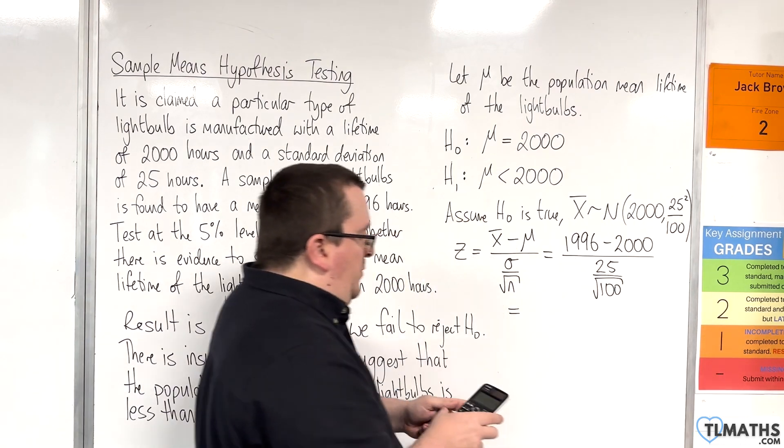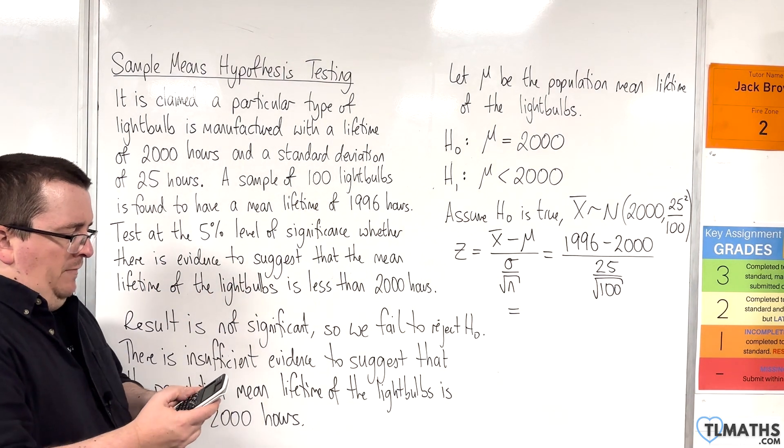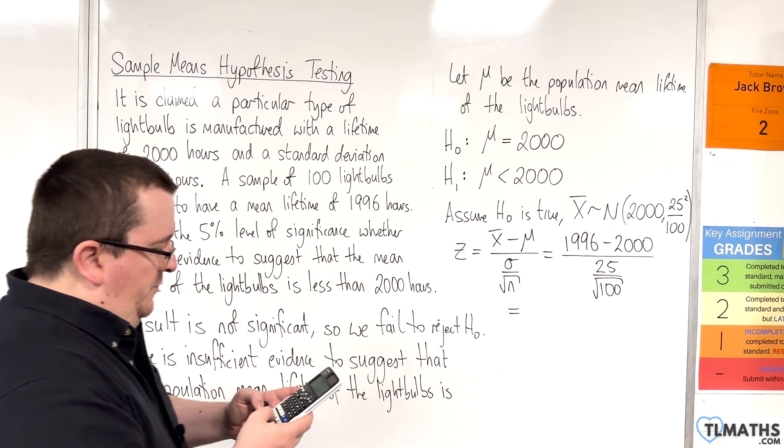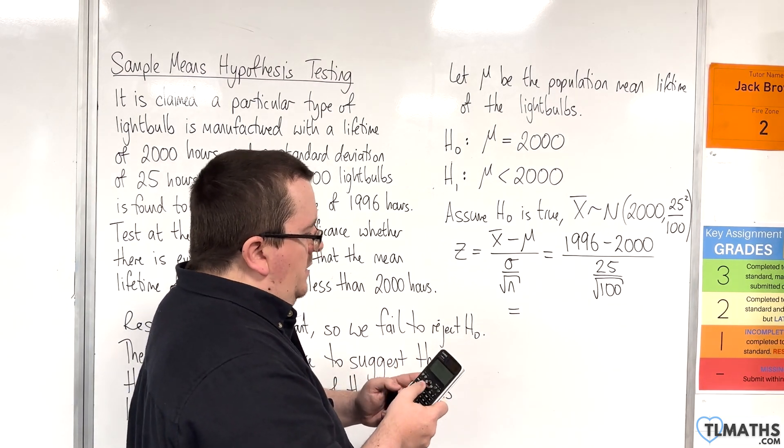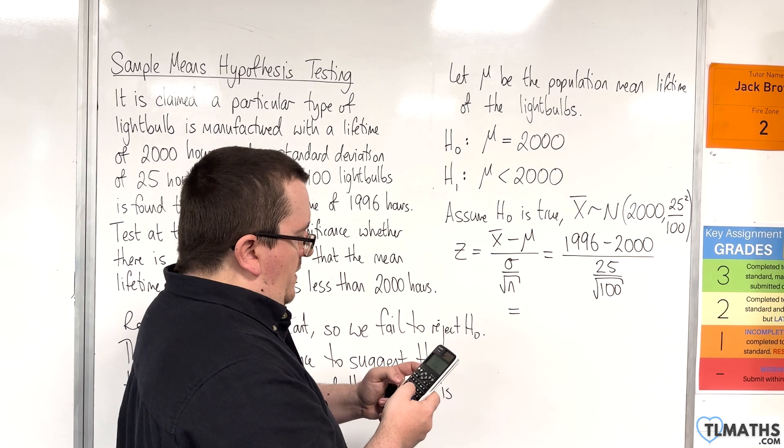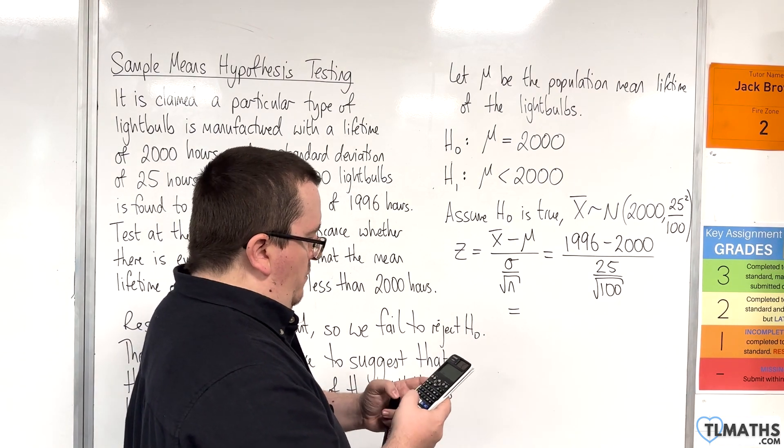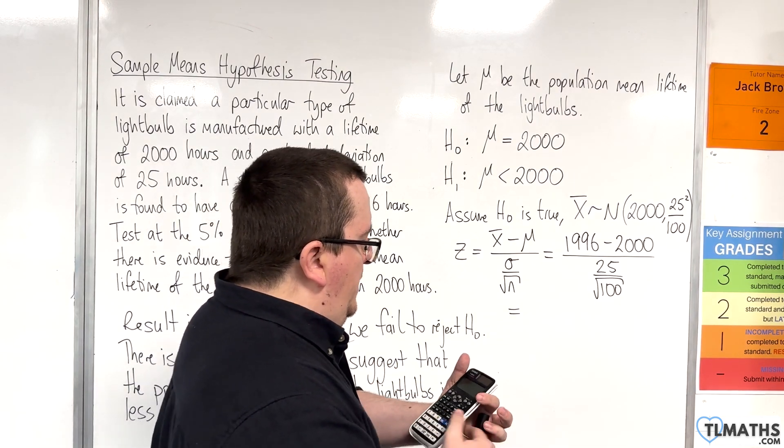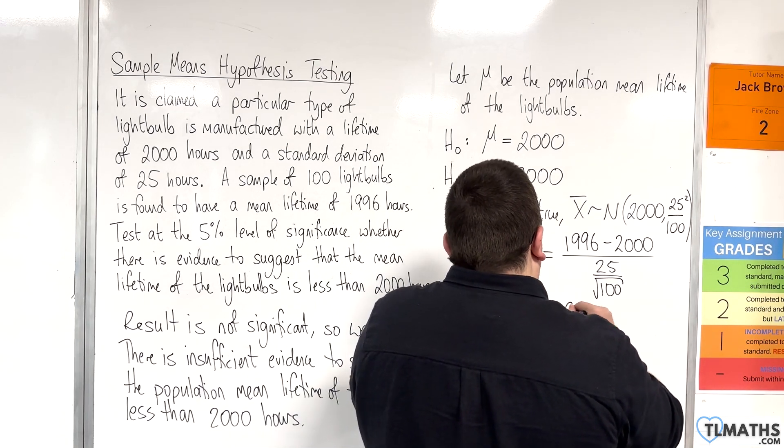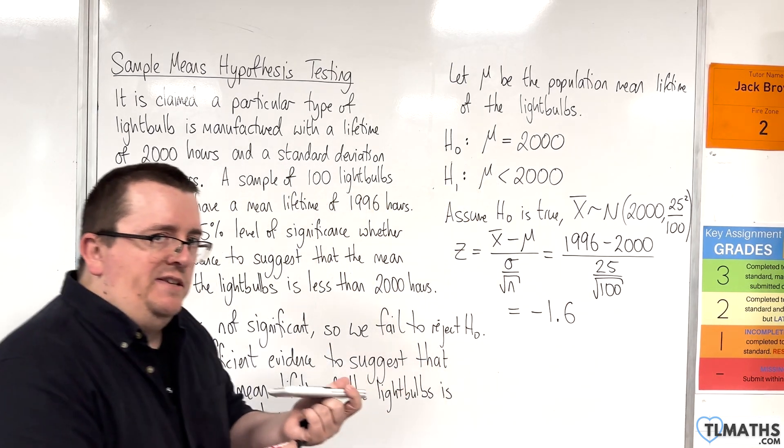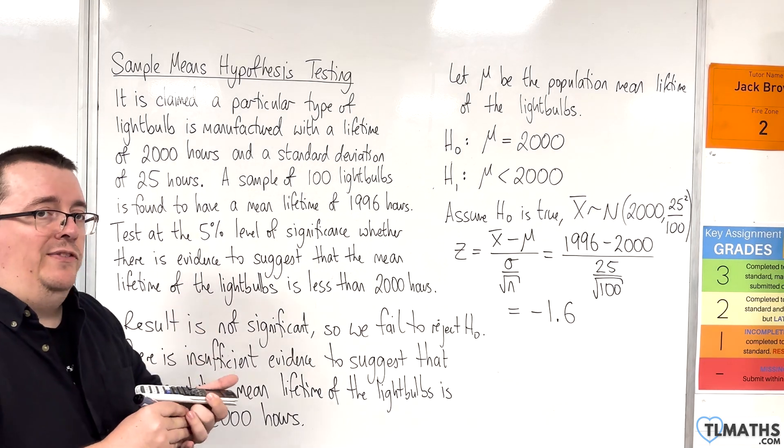Okay, so we put this into our calculator. Let's see what we get. So, we have 1,996, take away 2,000, divided by 25, over the square root of 100. So, we get minus 8 fifths, so minus 1.6. So, this is the test statistic. That's the value that we are testing.